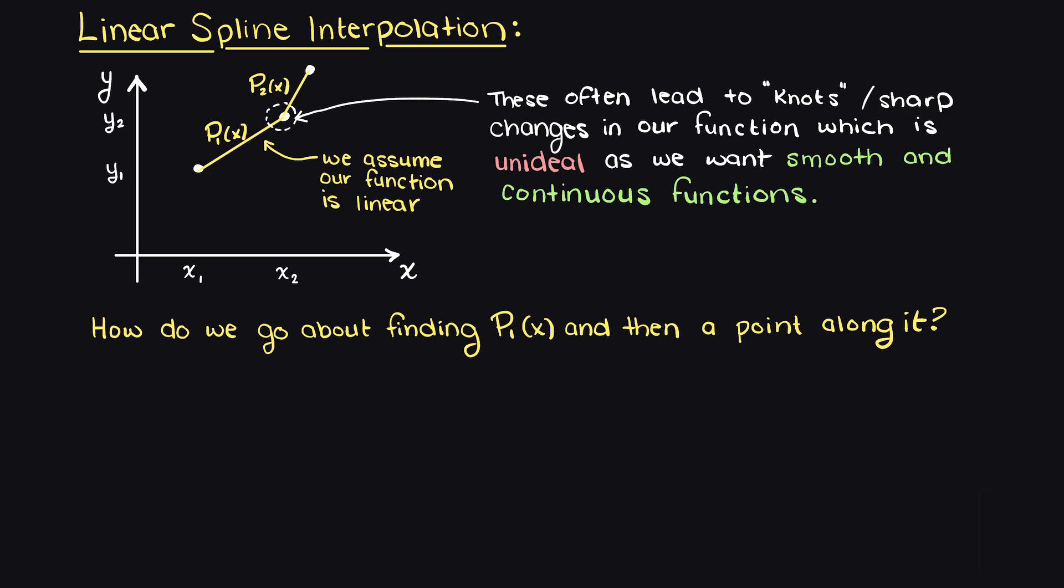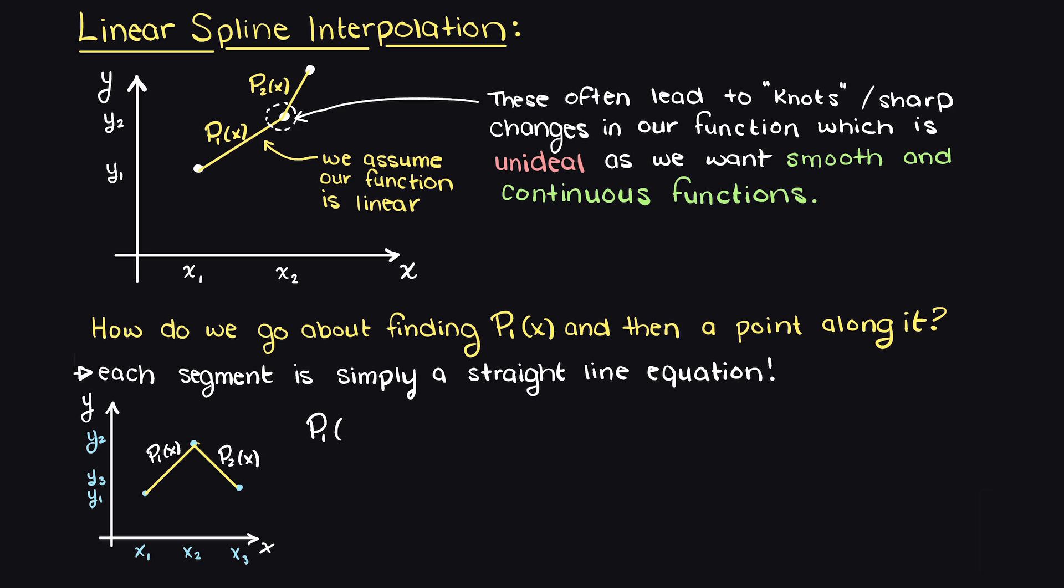Well, in a linear spline interpolation function we have a piecewise function, where each linear spline is a simple straight line equation with the domain of the bounding data points. So for example, if we wanted to define a linear spline for the following three subset of data points, we would have the following.